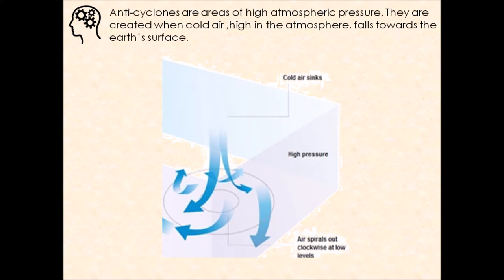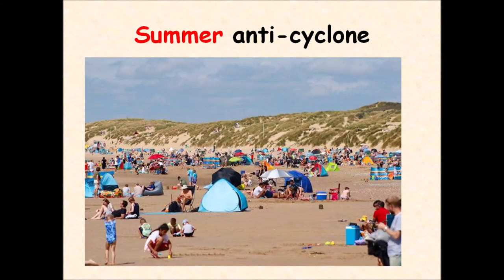Now we can get anticyclones in summer and in winter. In summer, anticyclones provide us clear skies. It is typically hot, sunny weather. We might even experience a heat wave and there are no clouds in a summer anticyclone, so it does not rain or cause any form of precipitation.